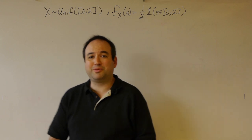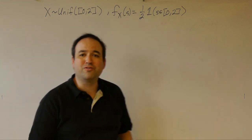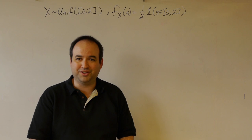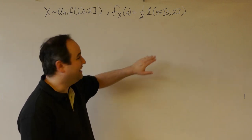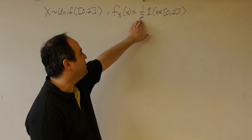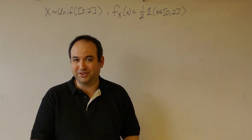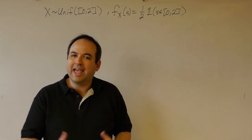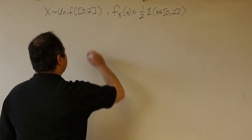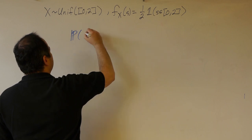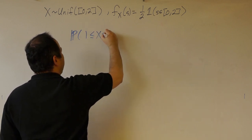Suppose that our random variable x is uniform over the closed interval from zero to two, which means that the density of x at the dummy variable s is going to be one-half times the indicator that s is between zero and two.